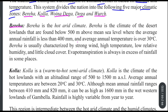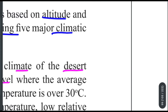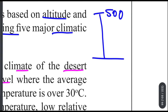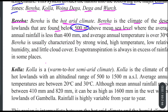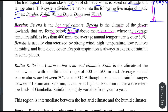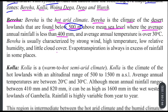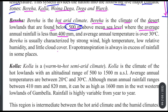The first zone is the climate of the desert, or hot arid zone. These climates are found below 500 meters above mean sea level. The average rainfall is around 400 millimeters, and rainfall is only a little more than a minimal amount per year.